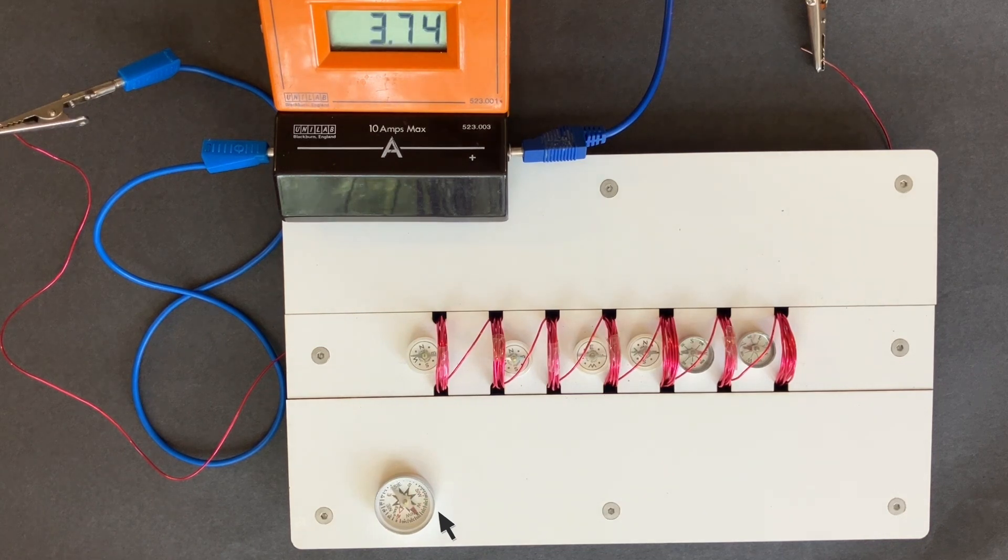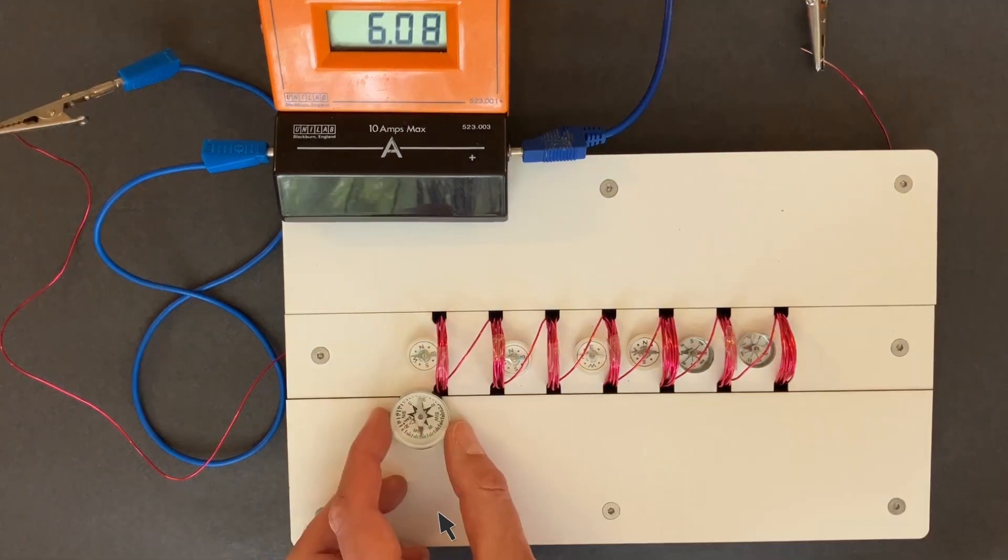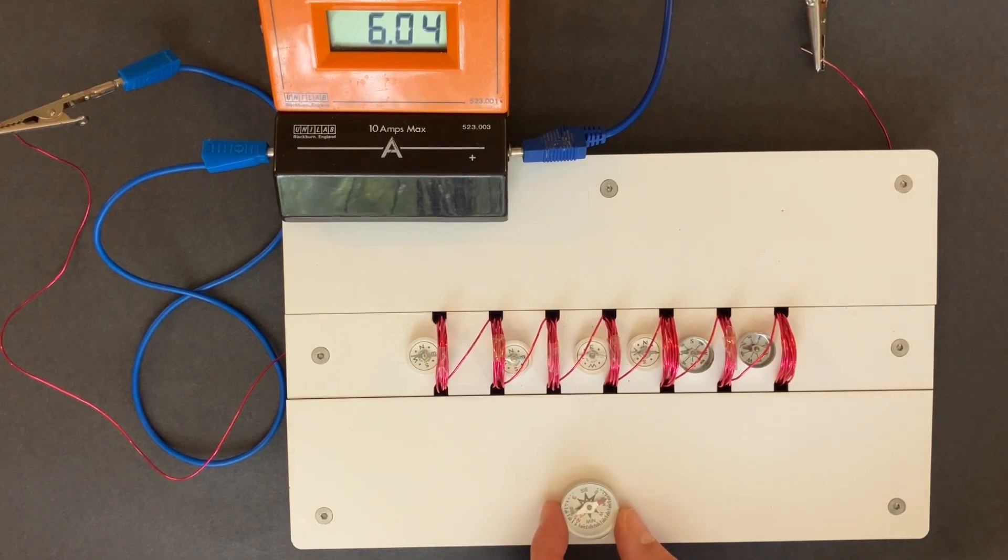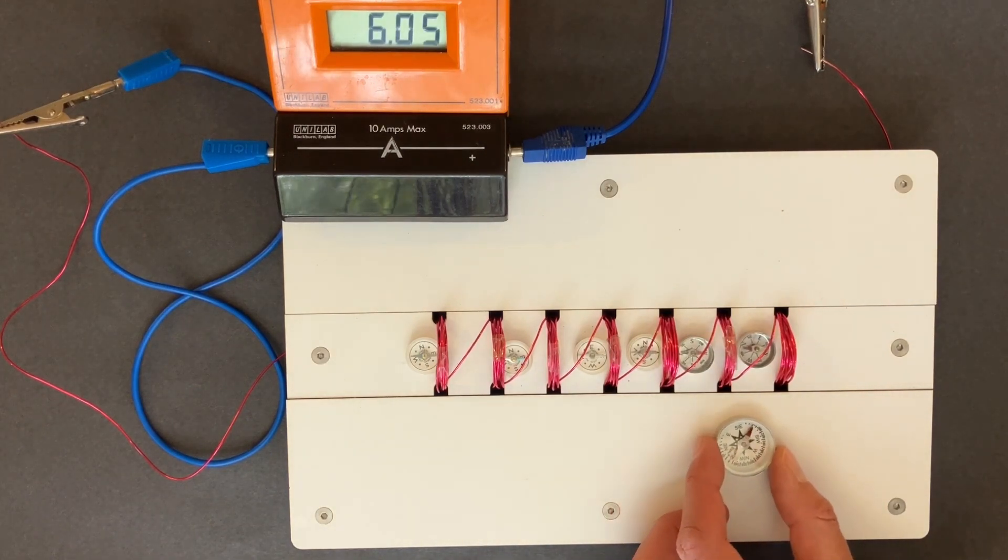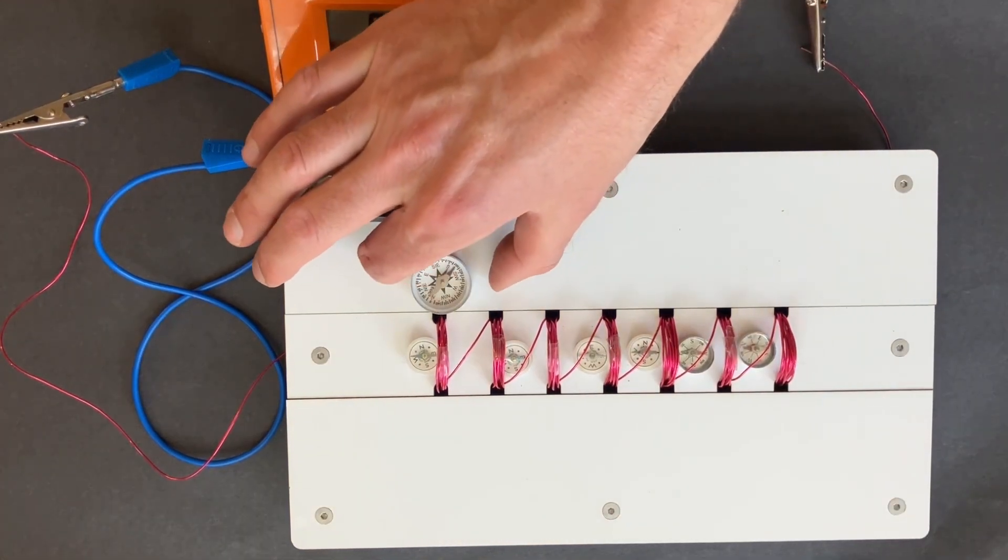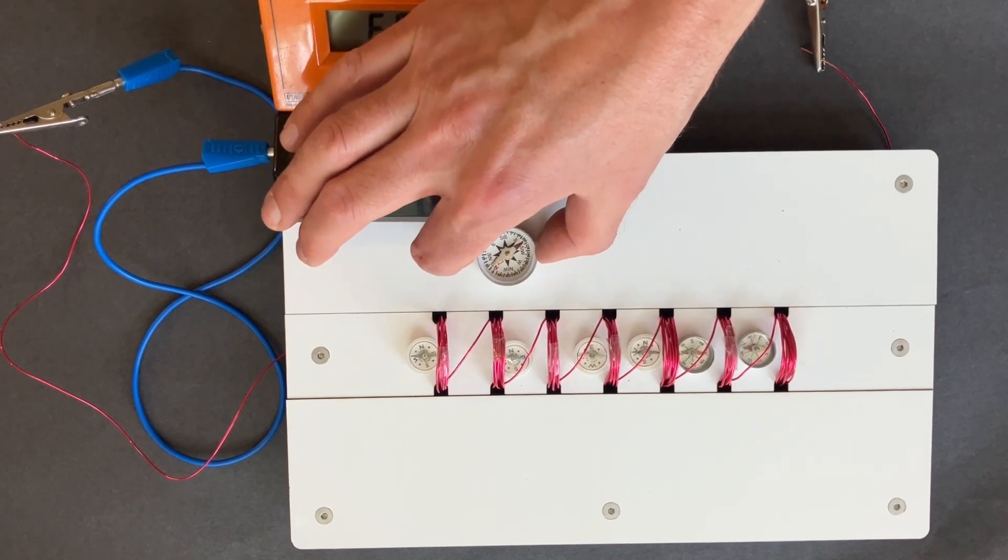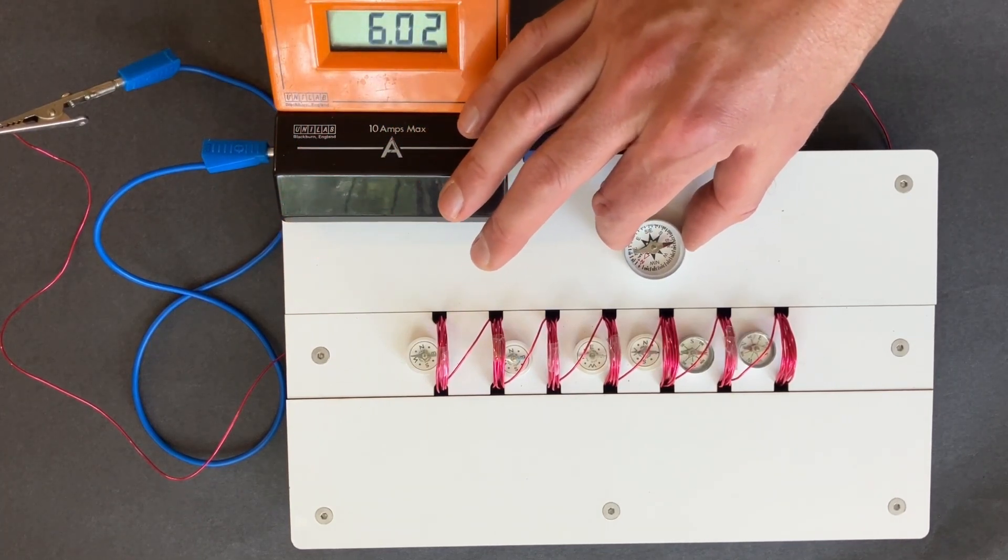This compass down here also gets affected by the magnetic field and in fact we can move a plotting compass round and see the shape of the magnetic field lines outside the coil, provided that we have a large current, in this case about 6 amps, flowing through.